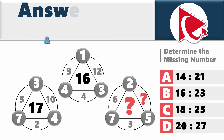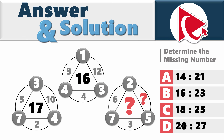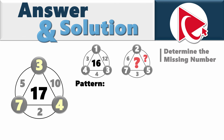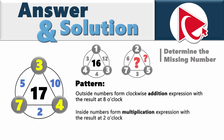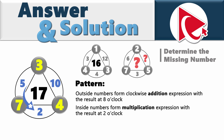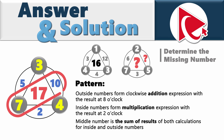If you look closely, you can easily recognize the pattern. Outside numbers form a clockwise addition expression with the result at 8 o'clock. And inside numbers form a multiplication expression with the result at 2 o'clock. The middle number is the sum of results of both calculations for inside and outside numbers.